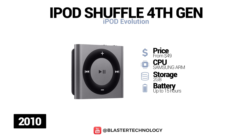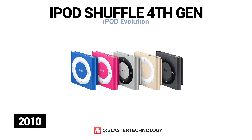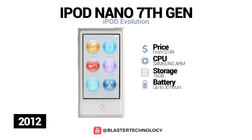The latest generation of iPod Shuffle was launched in 2010 and reintroduced clickable track and volume controls. This model also has voice-over and can have multiple playlists. The latest generation iPod Nano was launched in 2012, returning to a tall form with a larger multi-touch screen. This model was the thinnest in the Nano series, had the ability to use Bluetooth wireless headphones, and introduced the Nike Plus iPod fitness feature.